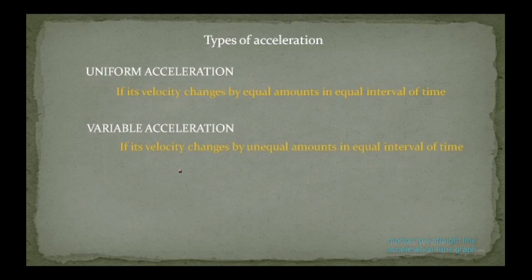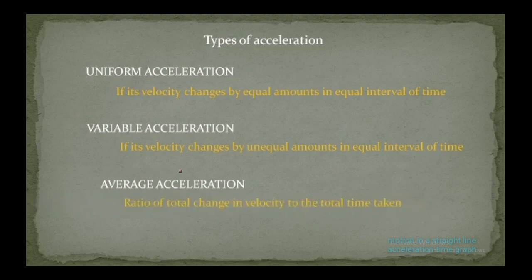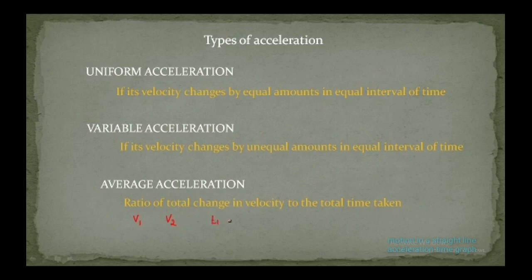Now let's discuss average acceleration. Imagine an object is moving with a variable velocity — different velocities at different times. Average acceleration is defined as the ratio of total change in velocity to the total time interval taken. If initial velocity is v1 and final velocity is v2, and times are t1 and t2, then average acceleration a_avg is written as: